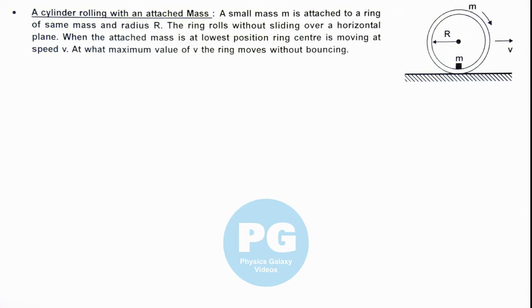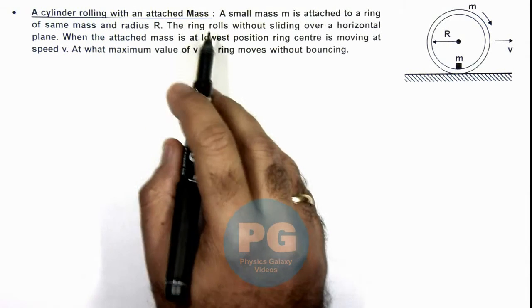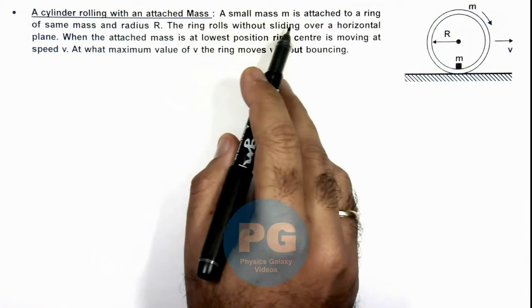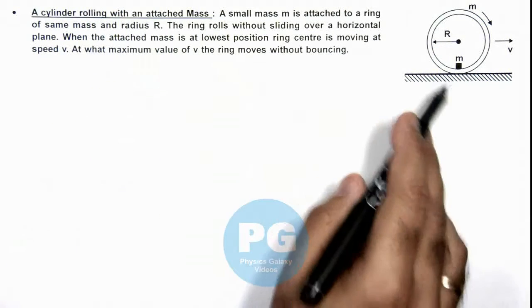In this illustration, we'll be analyzing a cylinder rolling with an attached mass. Here we are given that a small mass m is attached to a ring of same mass and radius R.